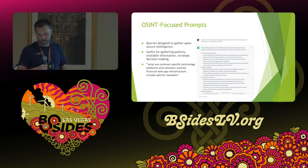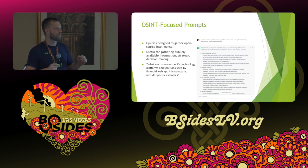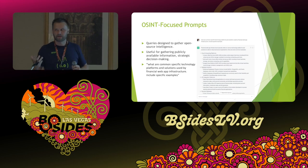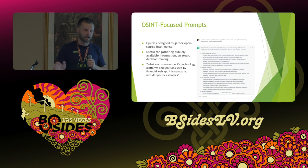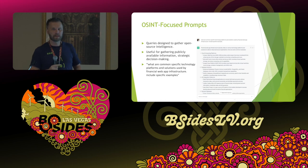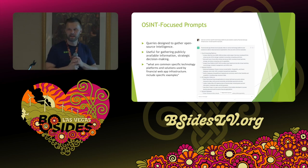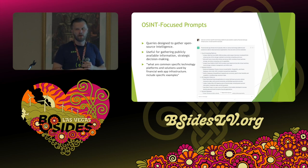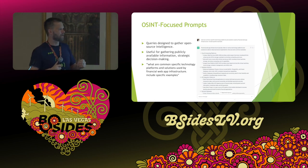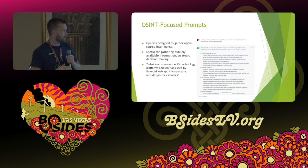ChatGPT has started locking down on direct OSINT queries, but if you just keep pressing it — you can lie to it and berate it as much as you want — you can get what you want. Parameter tuning is another technique, usually via the paid API. You can adjust parameters through chat as well: instead of max tokens, say 'provide your response in a series of five responses,' which effectively multiplies your response by five.